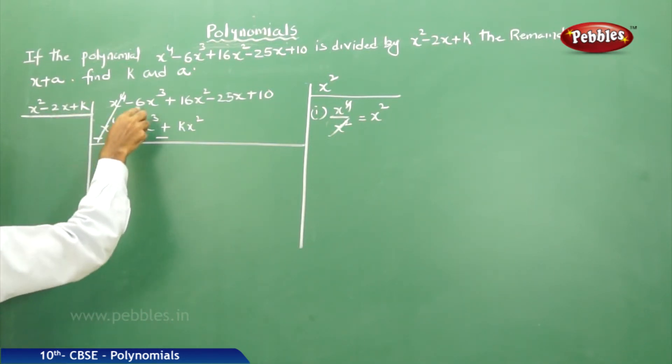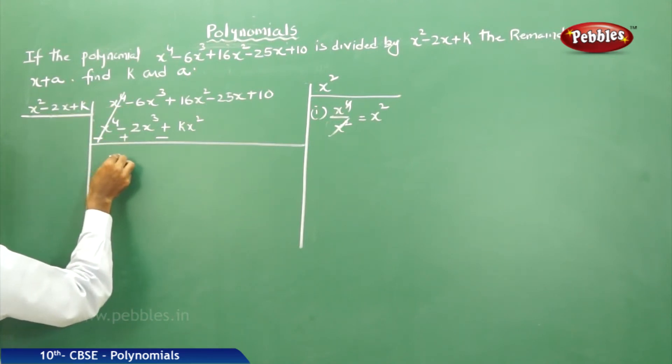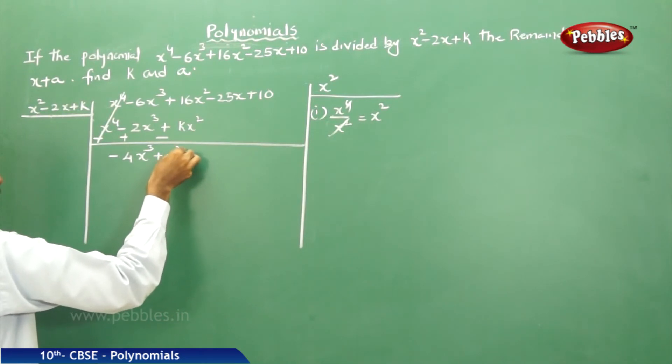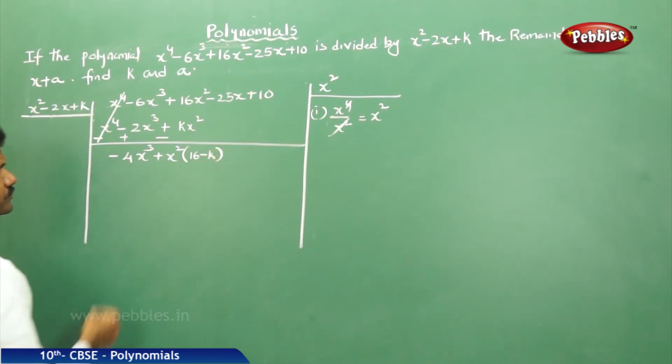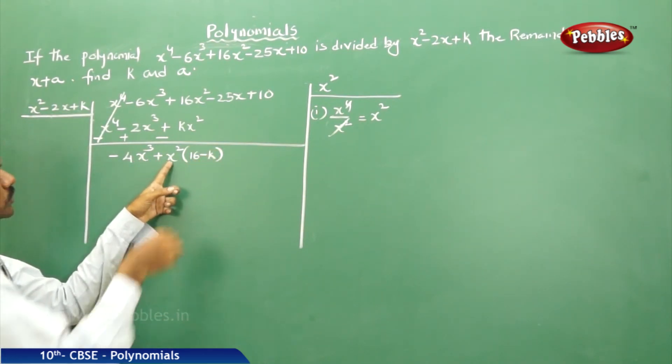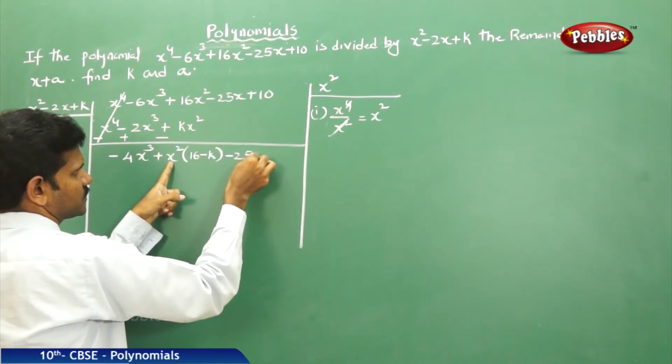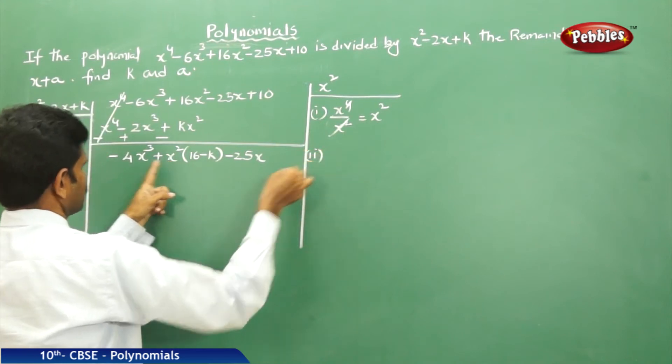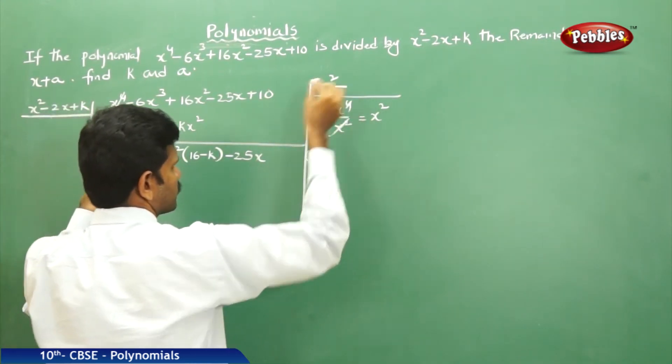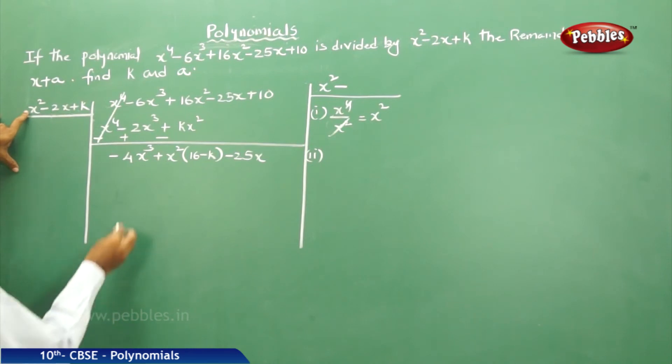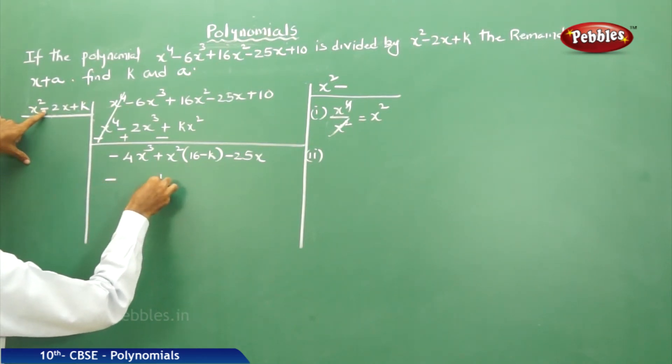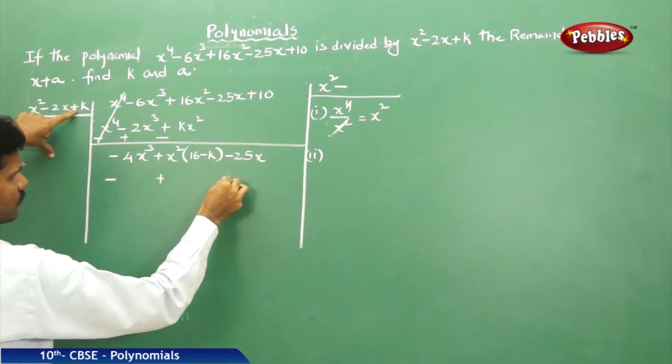Now minus 6x³ plus 2x³, nothing but minus 4x³. From these two, take x² common. Plus x² common. If you take x² common, 16 minus k left. x³, x, now down x part, minus 25x. Now second part. Here the minus, this part immediately you have to shift here. And next, you have to change the sign of your divisor. Plus is there, right? Then minus. Minus is there, right? Plus. Next, plus is there, right? Minus.